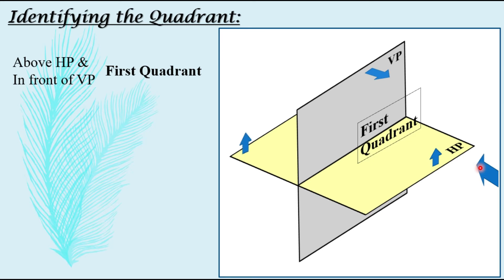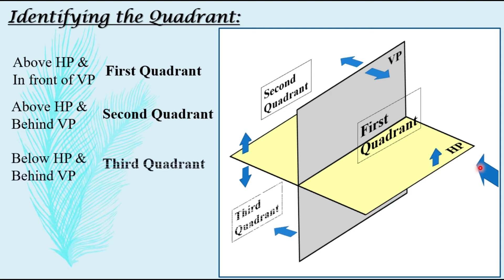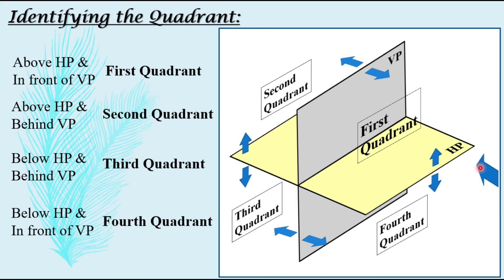If above HP and behind VP, we are talking about the second quadrant. If an object is placed below HP and behind VP, then it is placed in the third quadrant. And if it is placed below HP and in front of VP, then it is placed in the fourth quadrant.